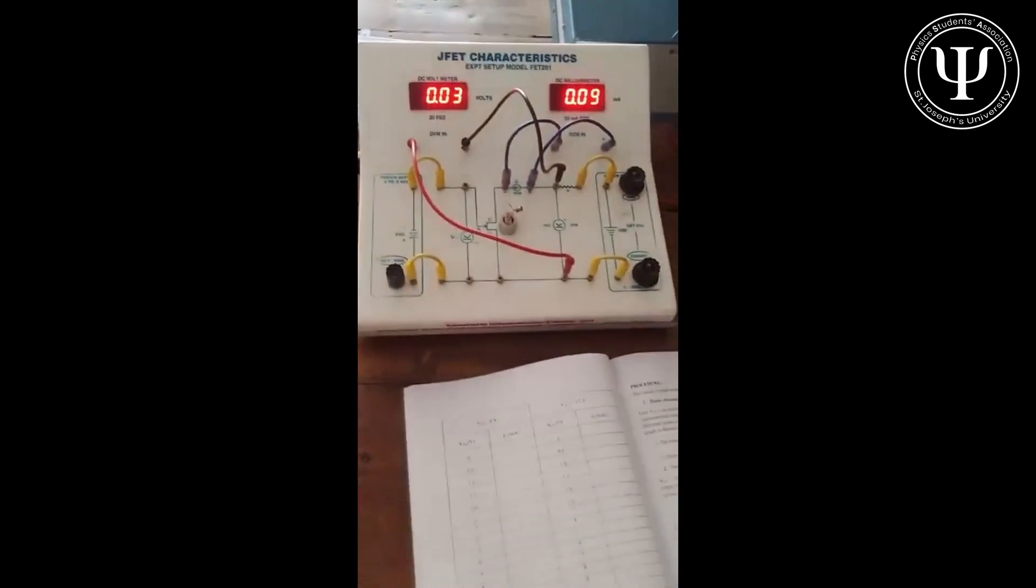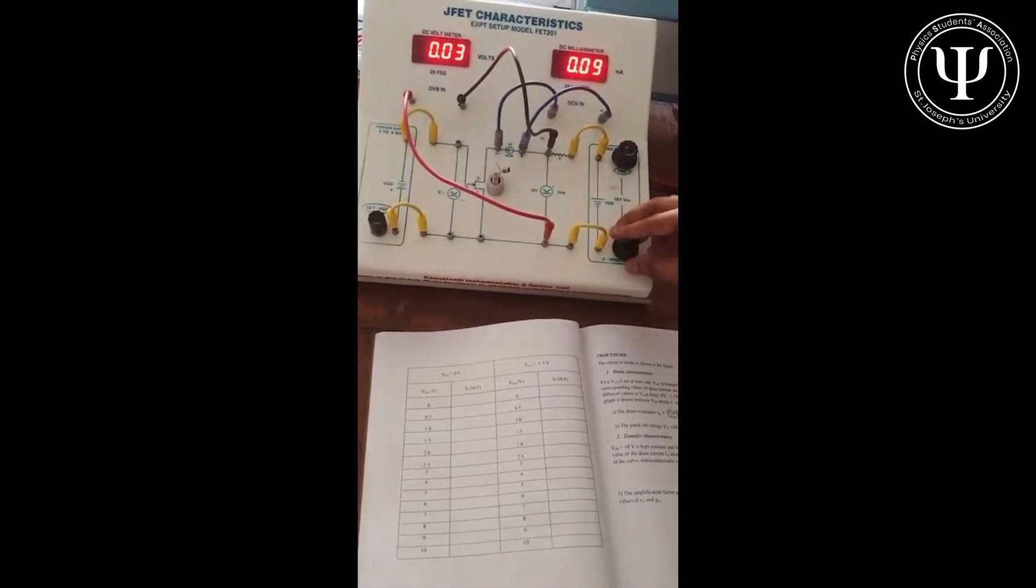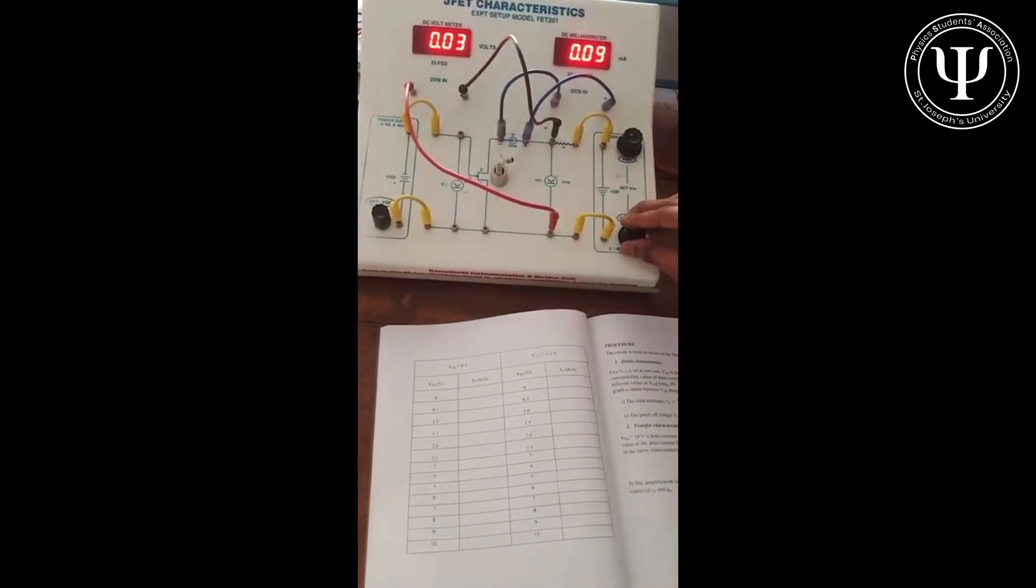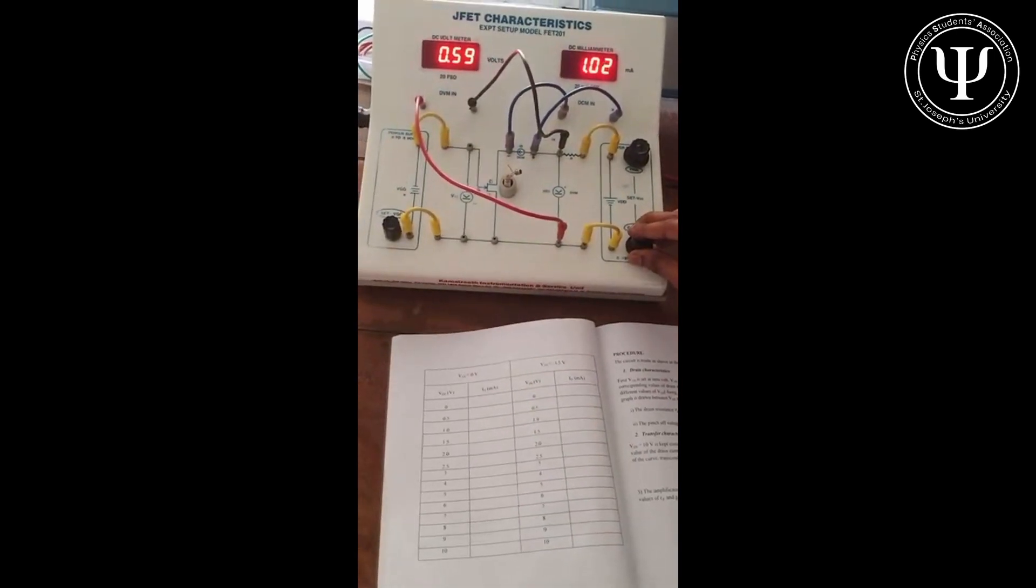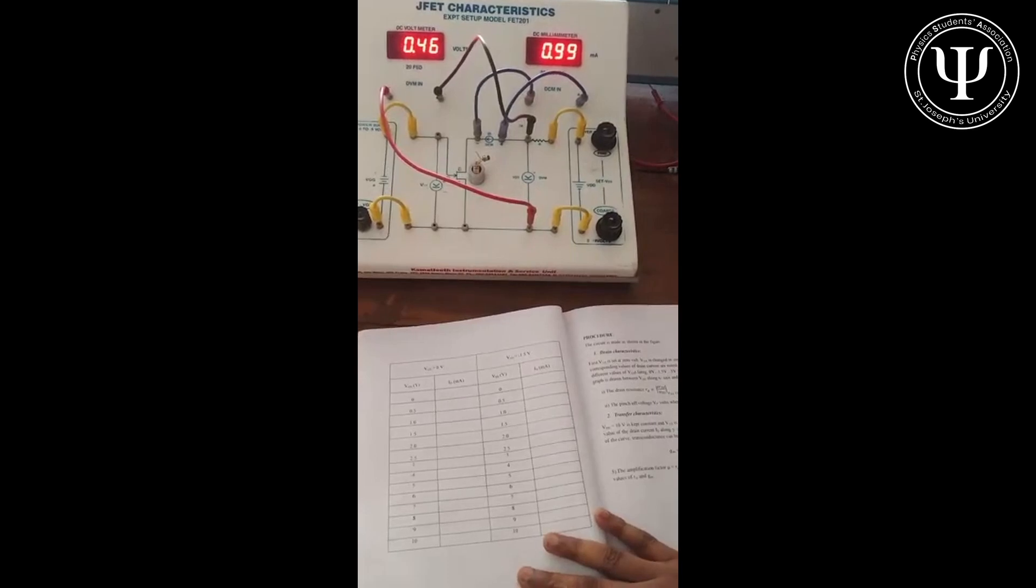Then again we start off from zero, that's the minimum value, and we increase by 0.5. We increase it by 0.5, note the value of ID and so on. And that's your input characteristics table in the column.